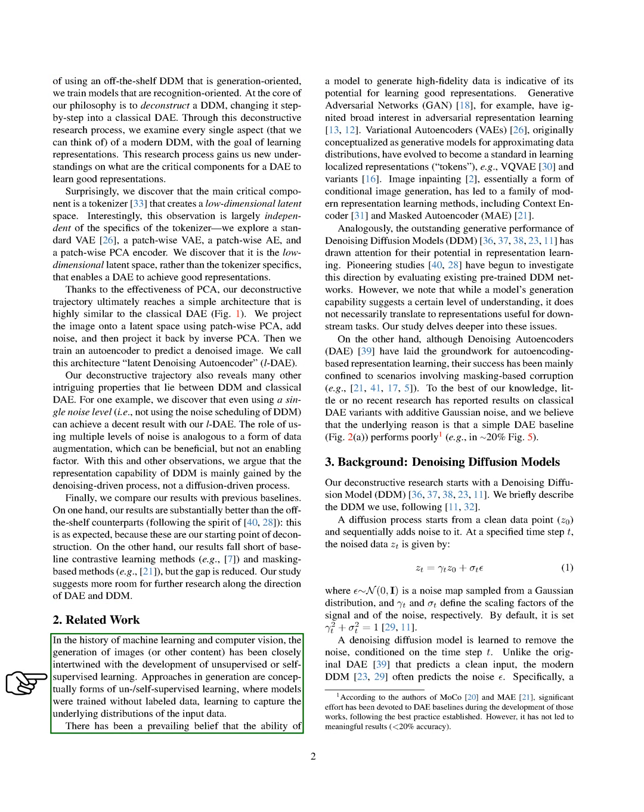In the history of machine learning and computer vision, the generation of images has been closely linked with the development of unsupervised or self-supervised learning. Approaches in generation are essentially forms of un-self-supervised learning, where models are trained without labeled data, learning to capture the underlying distributions of the input data. There's a common belief that a model's ability to generate high-quality data indicates its potential for learning good representations. Generative adversarial networks, GAN, for example, have sparked a lot of interest in adversarial representation learning. Variational autoencoders, VAEs, originally designed as generative models for approximating data distributions, have become a standard in learning localized representations.